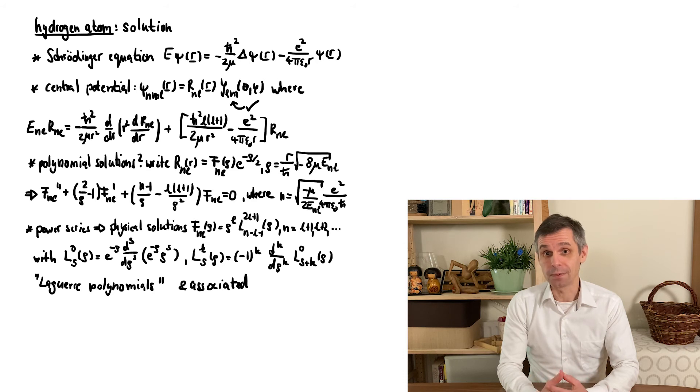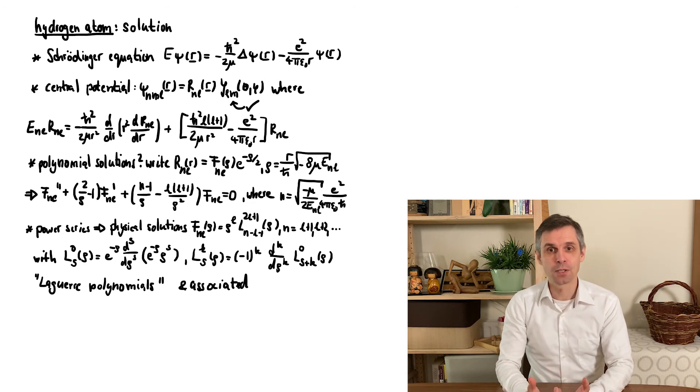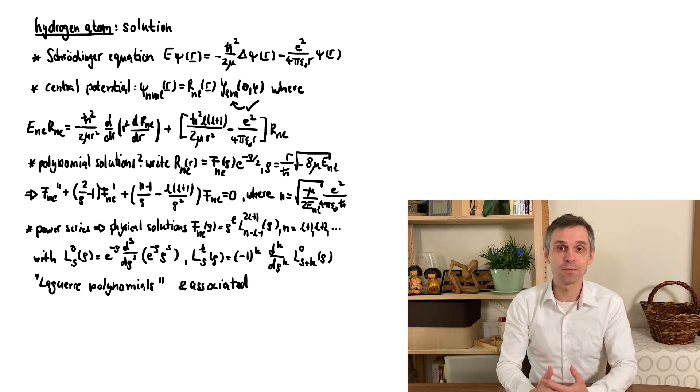They also show up in many other contexts, for instance in probability, where the Hermite polynomials appear via the link to Gaussians. So this solves the problem, at least for bound states with wave functions that can be normalized.